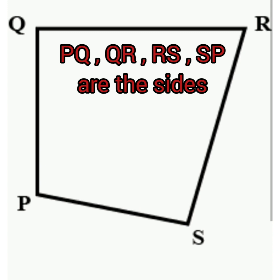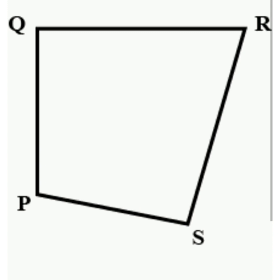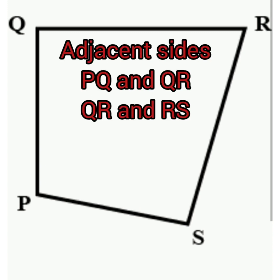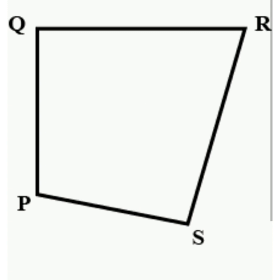Two sides which have a common vertex are called adjacent sides. Here PQ and QR are adjacent sides because they share the common vertex Q. QR and RS are also adjacent sides.